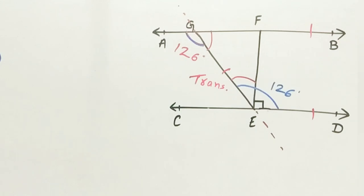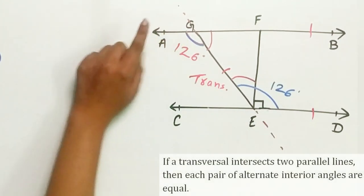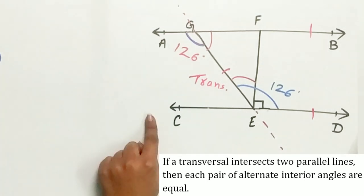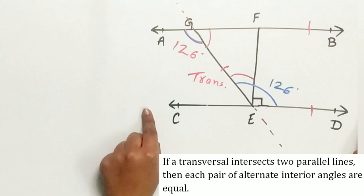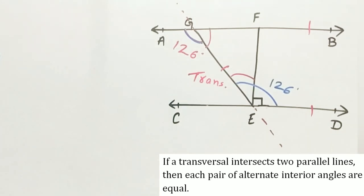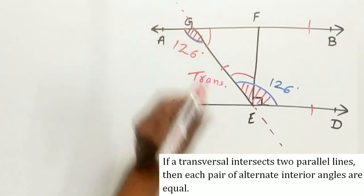Because theorem 6.2 says, if a transversal, that is GE, intersects two parallel lines, AB and CD, then each pair of alternate interior angles is equal.